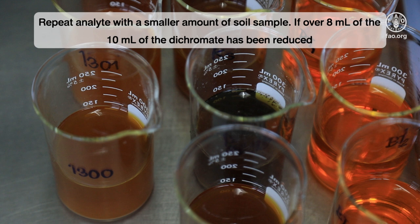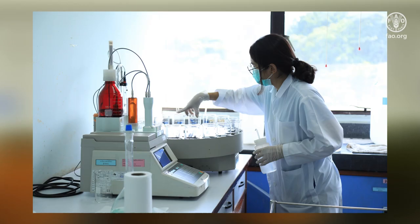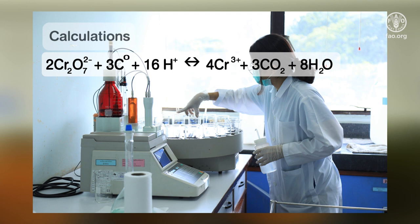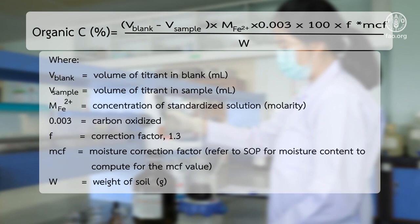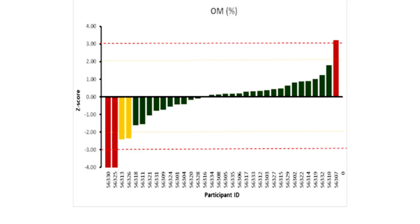the determination must be repeated with a smaller amount of soil sample. From the displayed equation, we can assess that 1 mL of 1 normal dichromate solution is equivalent to 3 mg of carbon. After the reaction, the excess of dichromate is titrated with 0.5 molar ferrous sulfate or 0.5 ammonium ferrous sulfate as the displayed equation shows.